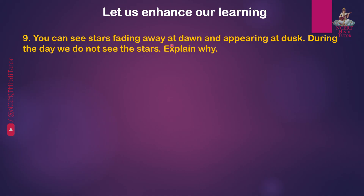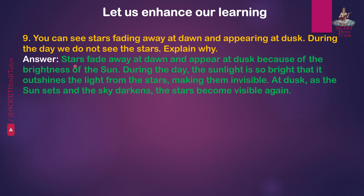Question 9: You can see stars fading away at dawn and appearing at dusk. During the day, we do not see the stars. Explain why. Answer: Stars fade away at dawn and appear at dusk because of the brightness of the sun. During the day, the sunlight is so bright that it outshines the light from the stars, making them invisible. At dusk, as the sun sets and the sky darkens, the stars become visible again.